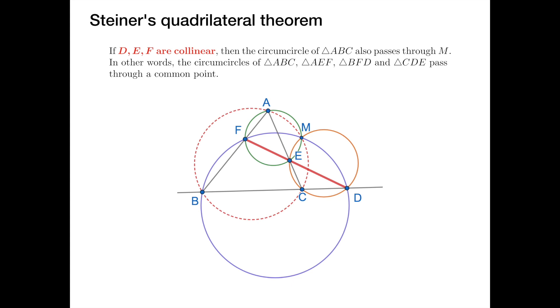In other words, we get four circumcircles passing through a common point, which is very close to what we have learned in the first lesson. So now let's see how they connect together.